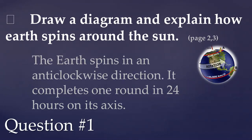The Earth, like a top, spins on its axis. It takes 24 hours to spin around its axis. This is called rotation. This rotation causes day and night.